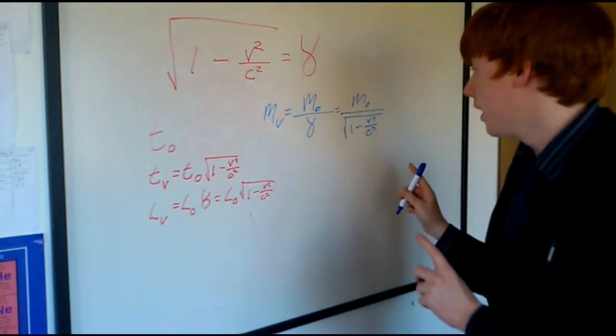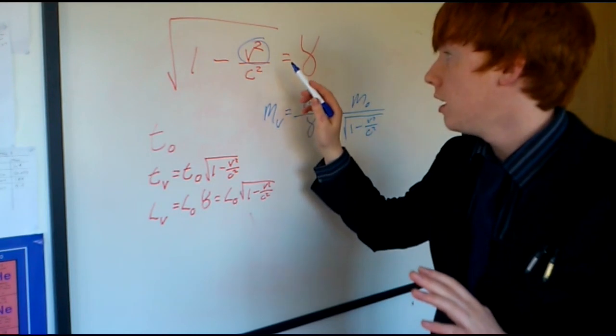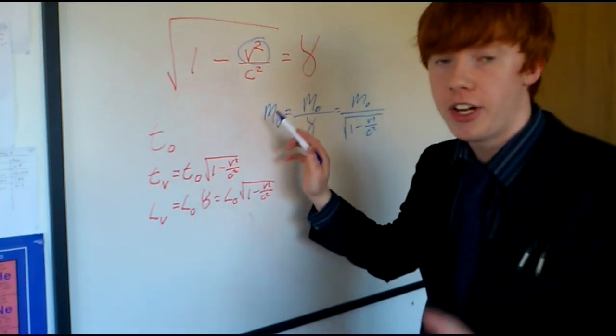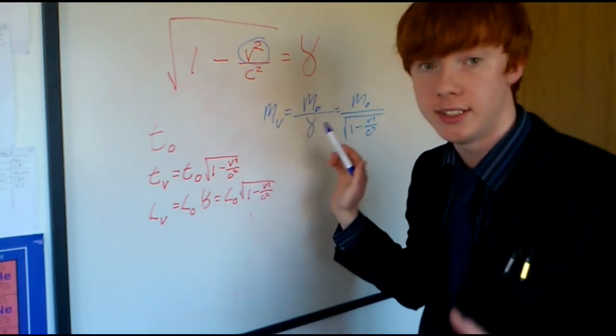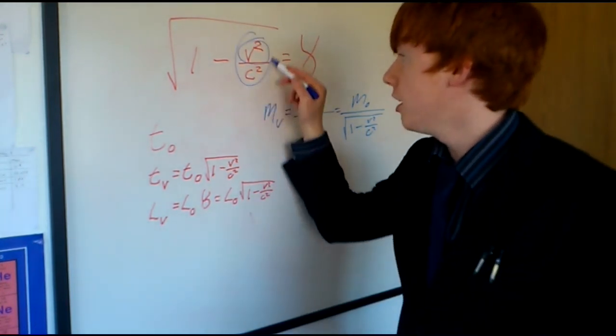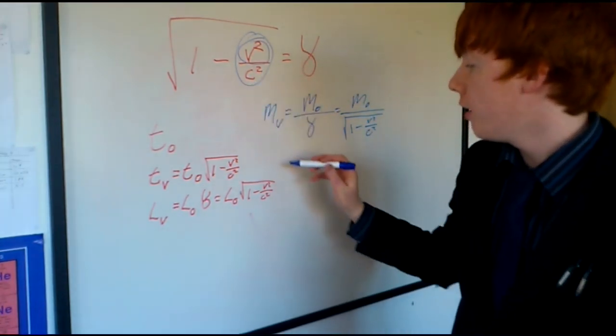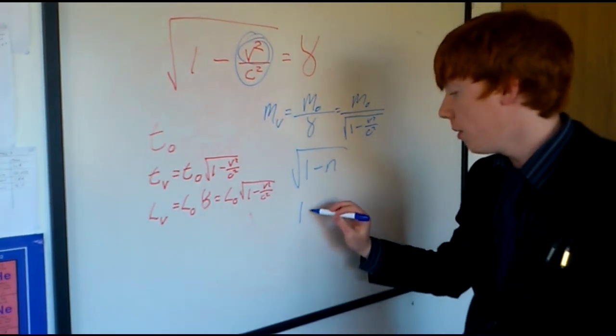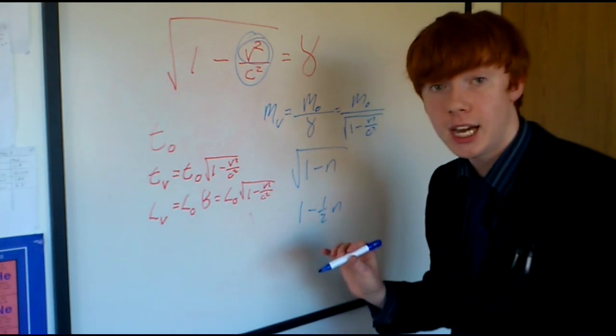Because for most of the time, our velocities are not anywhere near the speed of light. So our velocity squared divided by the speed of light squared is always going to be a very, very small number. That's much less than one, but it's still going to be more than zero. And luckily for us, there's a rule that allows us to simplify that when this here is very, very small, but more than zero. And that rule is when you have the root of one minus a number, you can change that to one minus half of that number when that number is very small, which for most of the time it is.